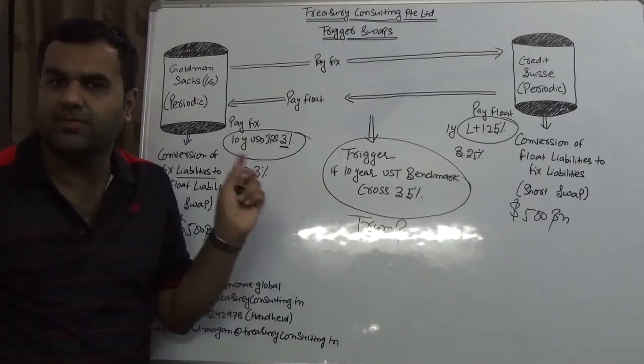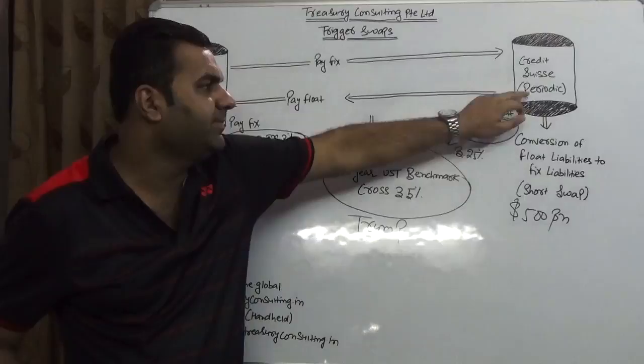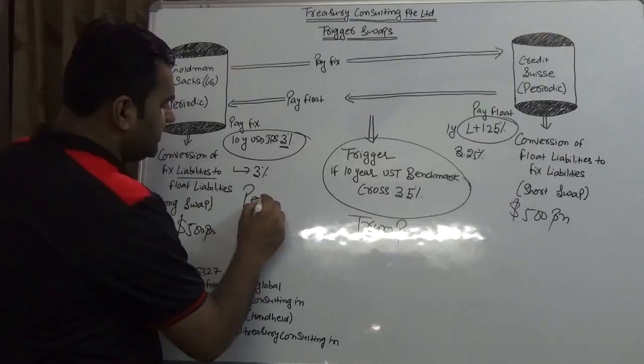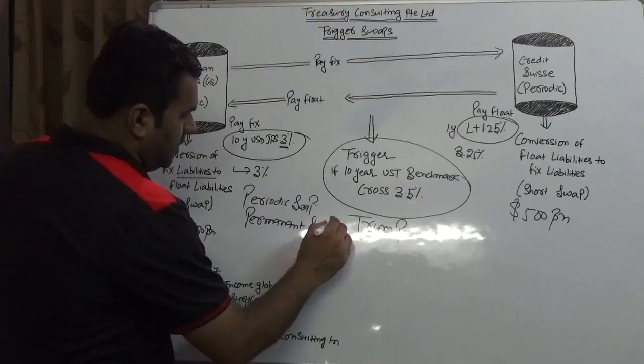Now there's a contention. You might have noticed I mentioned 'periodic' in brackets here and also mentioned 'periodic' here. There's a strategic reason why I mentioned that. There are two kinds of trigger swaps: one is periodic swap and one is permanent trigger swap.